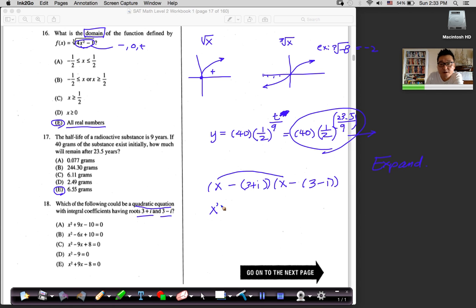x times x, x squared. x times that thing. Negative x times 3 minus i. Multiply this. Negative again. x times 3 plus i. And then finally, the last one, negative negative makes a positive. And then I got 3 plus i and 3 minus i.